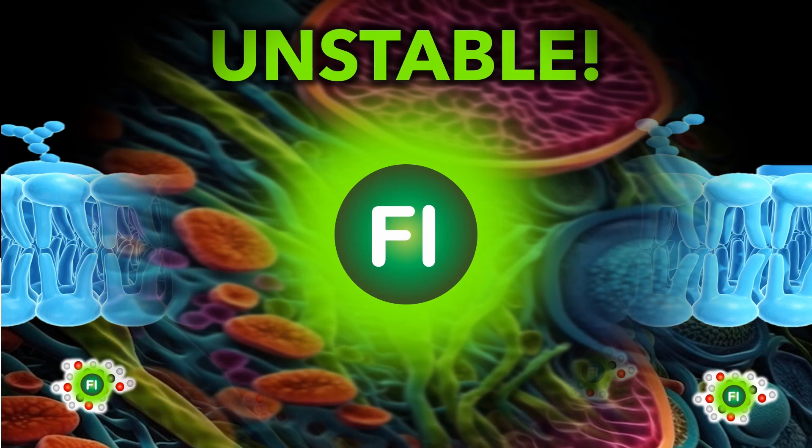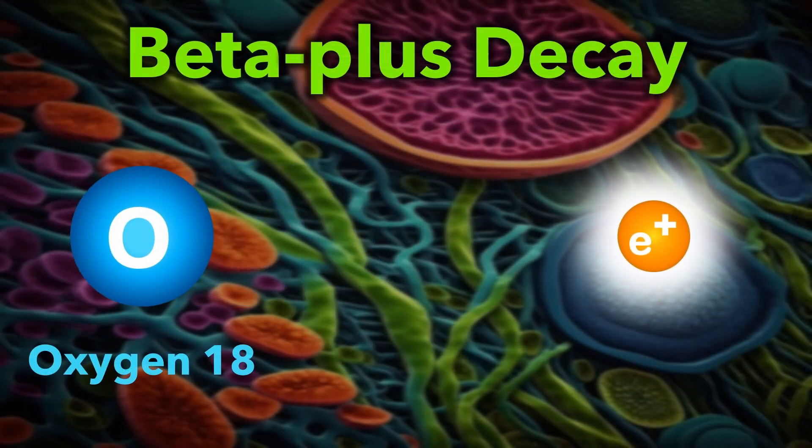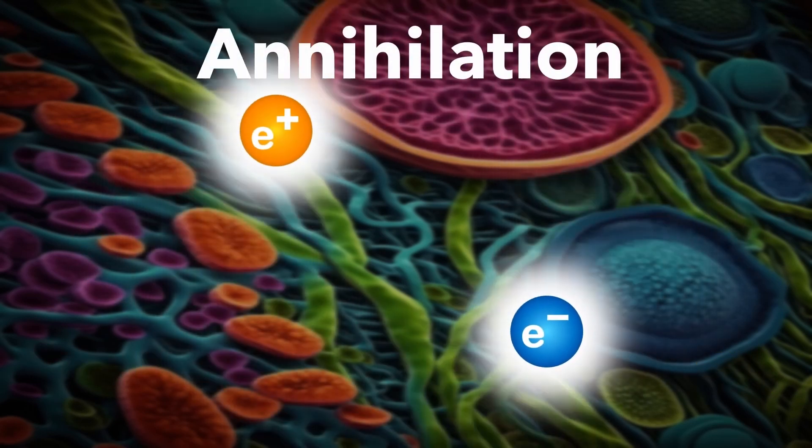Fluorine-18 is unstable, however, and quickly decays into oxygen-18 and a positron, basically an antimatter electron. When the positron touches electrons in the patient's body, the matter and the antimatter annihilate into pure energy in the form of two gamma rays.